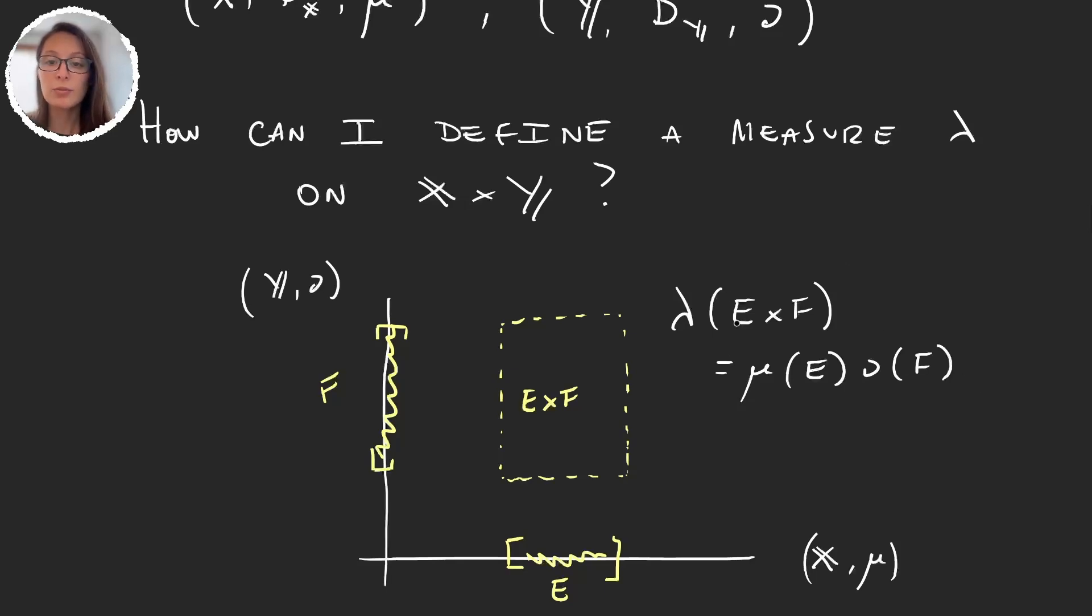But how can I define this measure lambda? So if I define this measure lambda like this, things get complicated when I take a set that is not a rectangle. I mean, let's say I have some set like this, then what's the measure lambda of this set? Well, this is no longer just a product of two sets, so things are just too complicated for us.